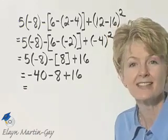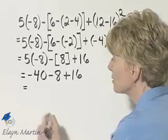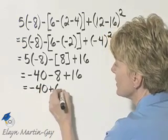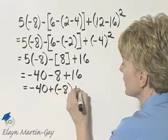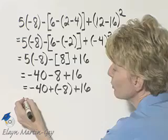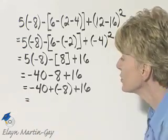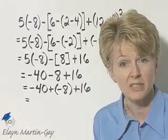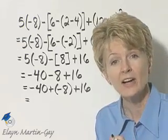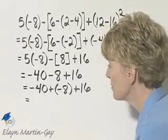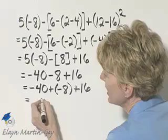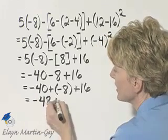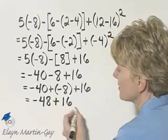If you'd like, you can take a step and make it all addition. I can make it negative 40 plus a negative 8 plus 16. And we will work this from left to right. Negative 40 plus negative 8, how do you add two numbers with the same sign? You add their absolute values and keep the common sign. 40 plus 8 is 48, and the common sign is negative, and then plus 16.